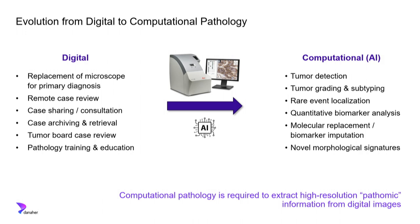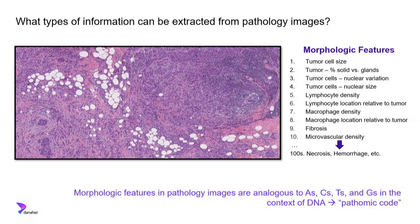How do we get to these pathomic insights? One of the first steps is to use computational approaches to extract high-resolution information from these images — so-called pathomic information. All kinds of information can be extracted, including morphologic features such as tumor cell size, nuclear shape, lymphocyte density, necrosis, hemorrhage, and more. You can think of these morphologic features as analogous to the A's, C's, G's, and T's in the context of DNA and the genetic code — together they comprise a pathomic code.